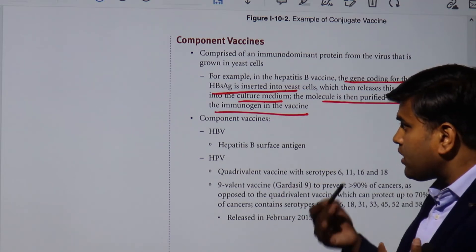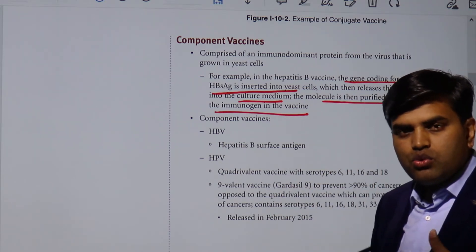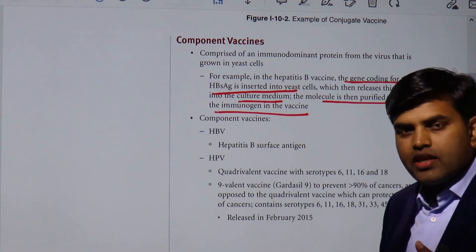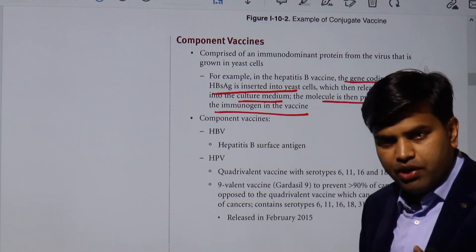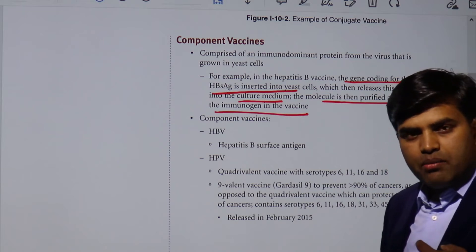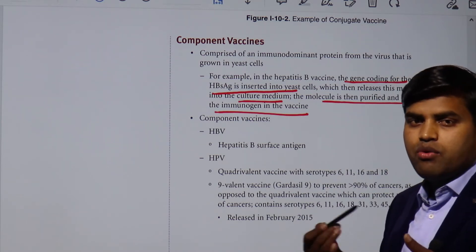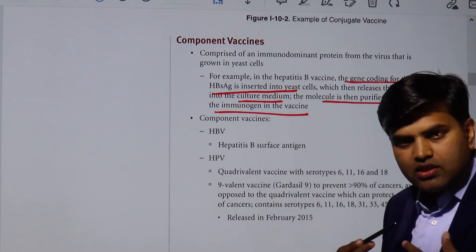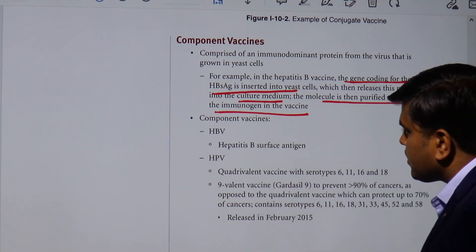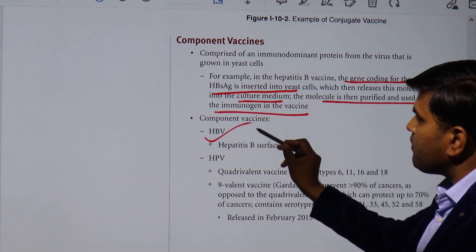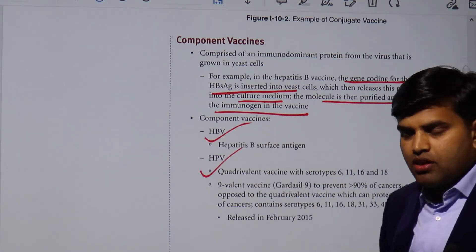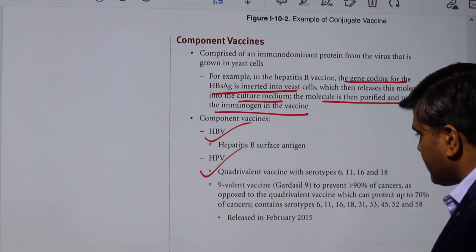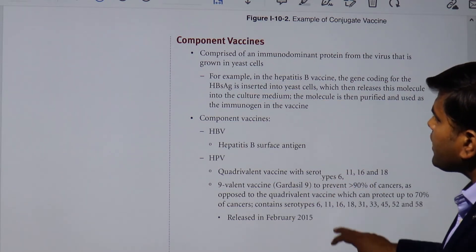If someone has received the HBsAg vaccination, they will only have antibody against the surface antigen of hepatitis B virus — no antibody against e-antigen or core antigen, because they have never been exposed to the actual hepatitis B virus. If a person had been exposed to hepatitis B and recovered (become immune), they would have antibodies against surface antigen, core antigen, and e-antigen. Since we are immunized but not naturally immune, we only have antibody against the surface antigen. The hepatitis B vaccine and HPV vaccine are examples of component vaccines.